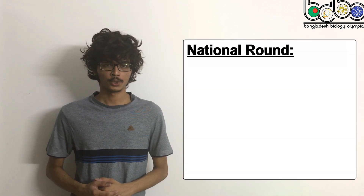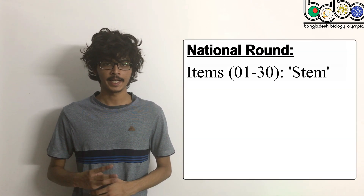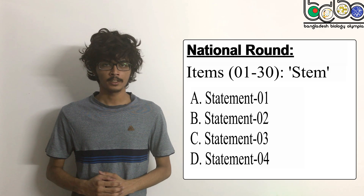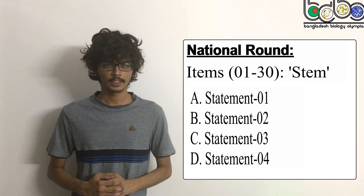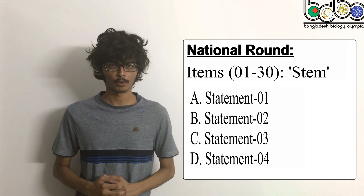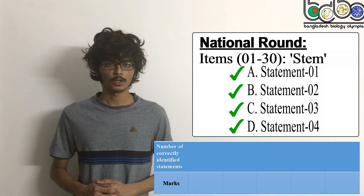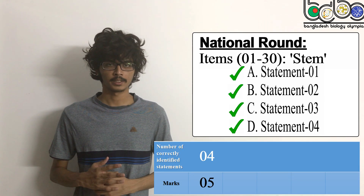As you know, the national round will contain 30 items. Each item will contain 4 statements. You will have to identify each statement as either true or false. If you correctly identify all 4 statements of an item, you will receive 5 marks.